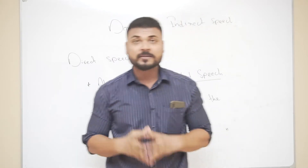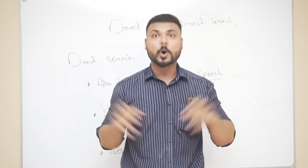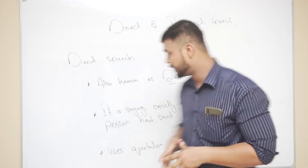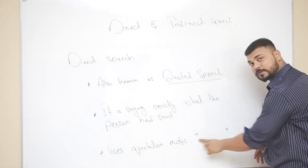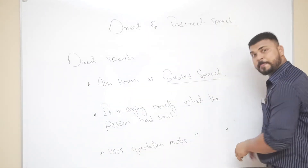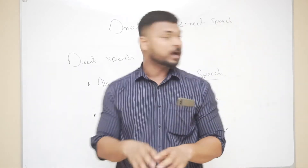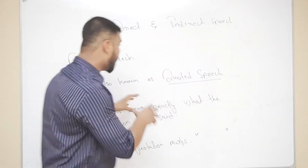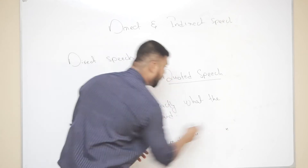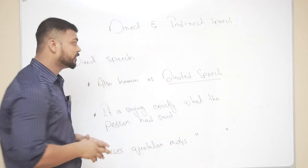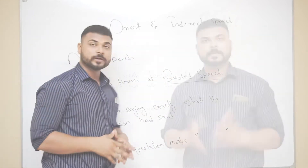And remember one more thing: we use inverted commas in direct speech. These are also called quotation marks. So this is how we identify what direct speech is — it has inverted commas and it is also called quoted speech.